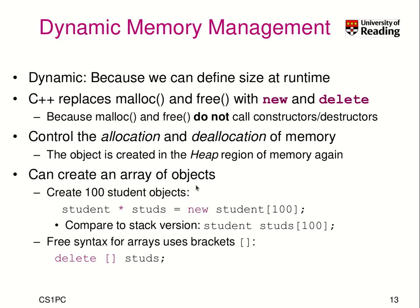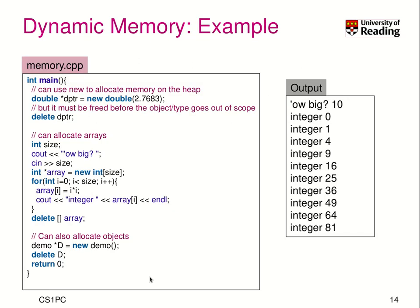We can create an array of objects — for example, 100 student objects — by saying something like new student[100] and assigning it to a pointer. This is similar to the stack version where we write students[100]. In either case, 100 constructor methods will be called for the 100 student objects, if they exist. One important point: when you allocate arrays of objects, you need to use the delete[] bracket syntax. That was a brief overview of what we covered in the past; now let's look at how we use dynamic memory management.